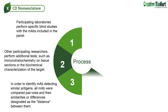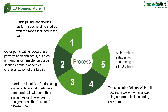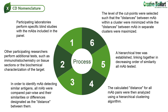The calculated distance for all monoclonal antibody pairs were then analyzed using a hierarchical clustering algorithm. The algorithm forms clusters beginning with the pairs of monoclonal antibodies showing the closest or least distance associations, and then adds successive monoclonal antibody pairs to the clusters. In this manner, a hierarchical tree was established, linking together in decreasing order of similarity all monoclonal antibodies tested. Once a hierarchical tree was established, cut points were determined to subdivide the tree into several individual monoclonal antibody clusters. The level of the cut points were selected such that distances between monoclonal antibodies within a cluster were minimized while distances between monoclonal antibodies in separate clusters were maximized. In this manner, a family of clusters including all monoclonal antibodies tested was established. These clusters were designated clusters of differentiation.